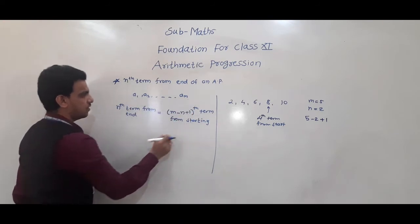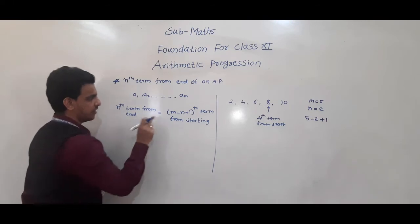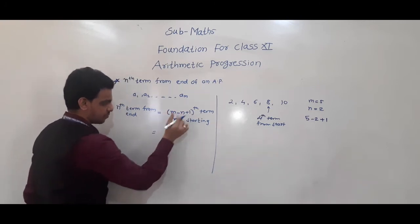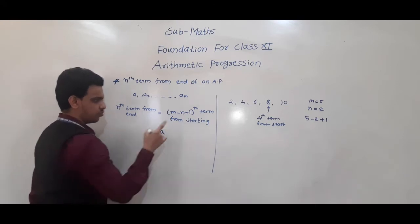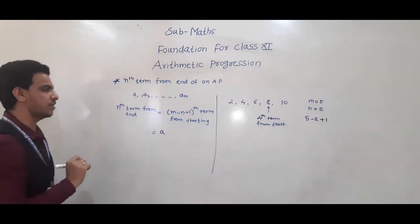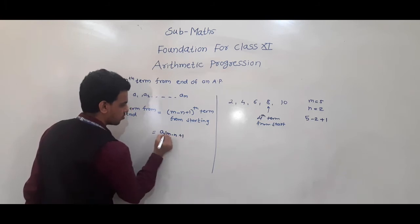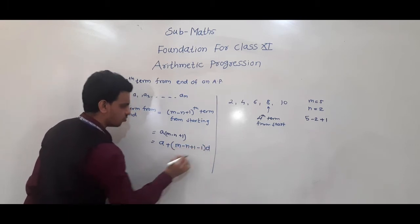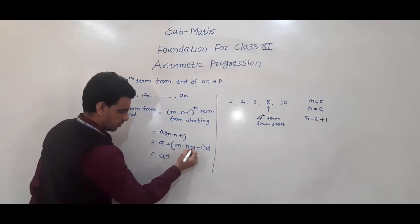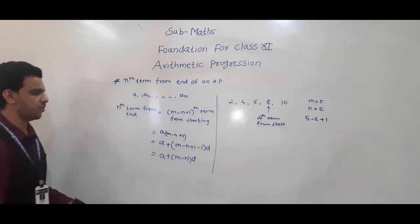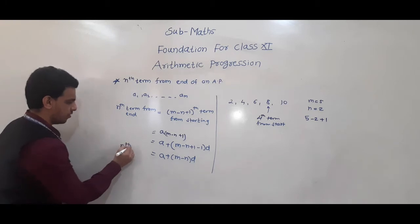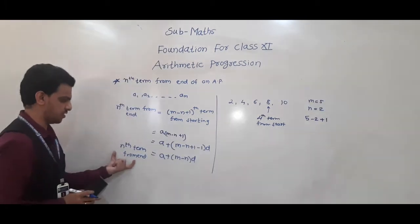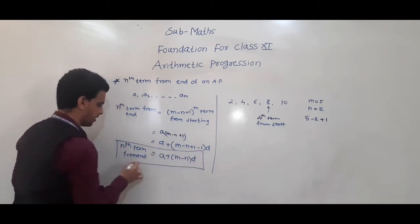Similarly, if total m terms are there and we have to find the nth term from end, it equals the (m − n + 1)th term from starting. Using the nth term formula an = a + (n−1)d, the nth term from end = a + (m − n + 1 − 1)d = a + (m − n)d.